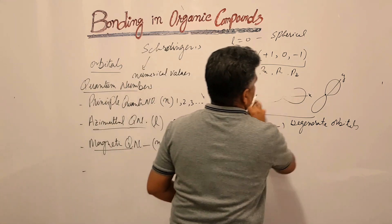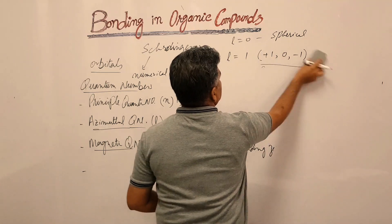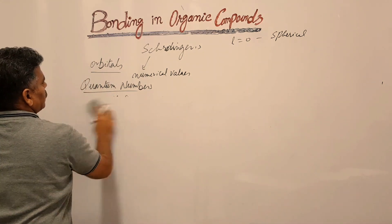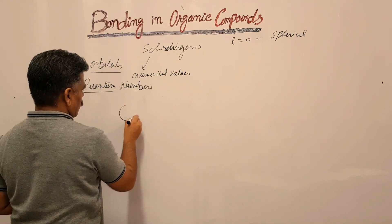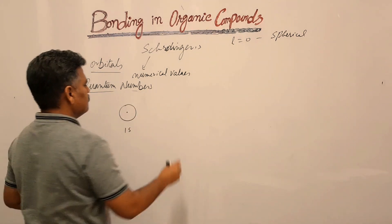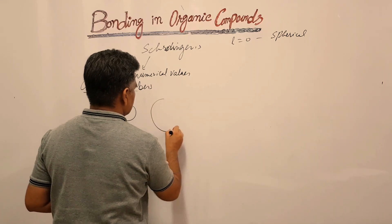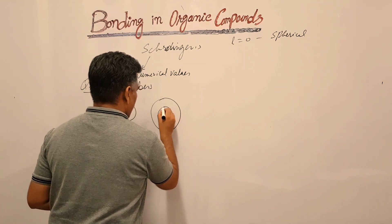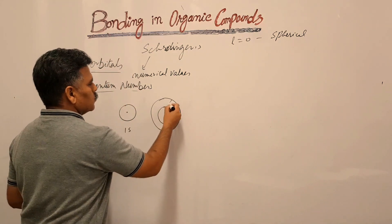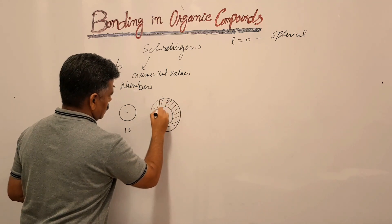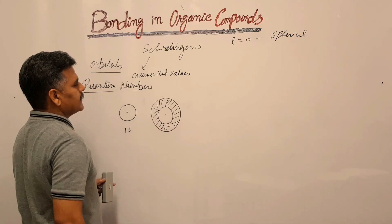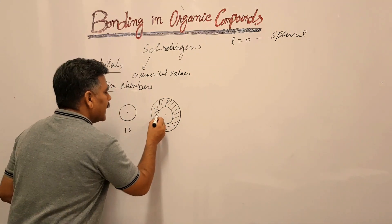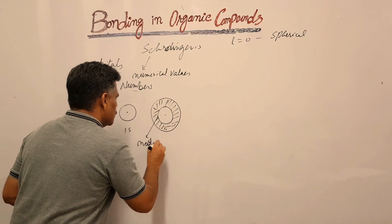Suppose we have the s orbital. We have the 1s orbital and the 2s orbital. The 2s is larger than the 1s; it is higher in energy compared to 1s, and here a spherical node is present. The 2s orbital contains a node — a region where the electron density is zero.